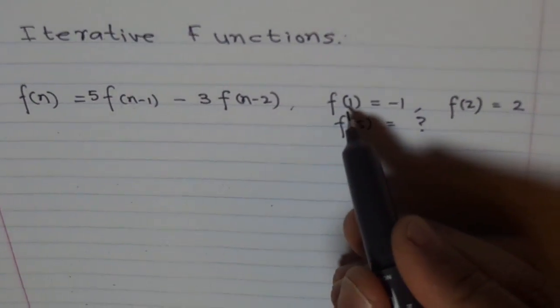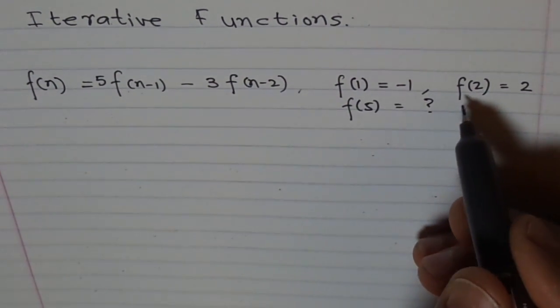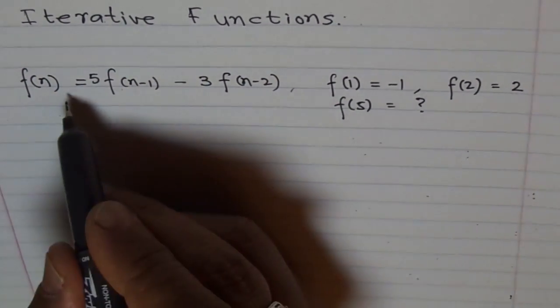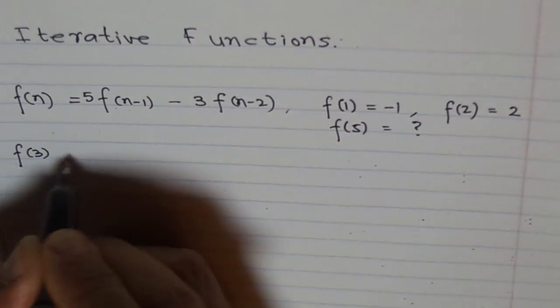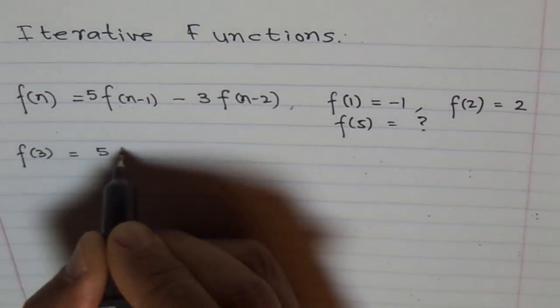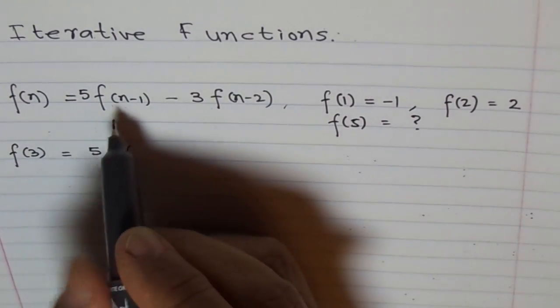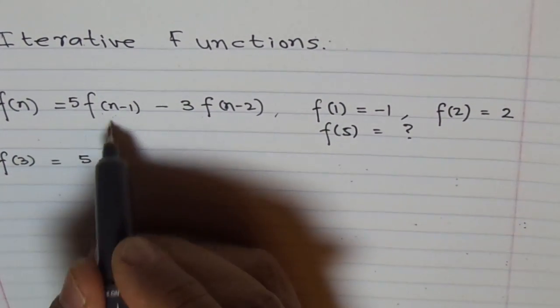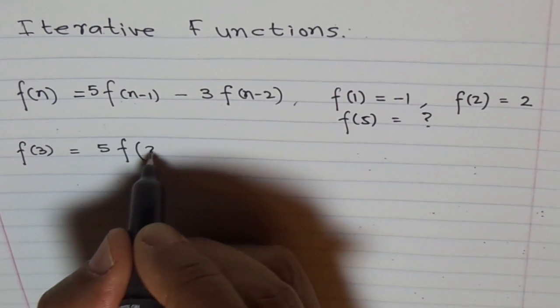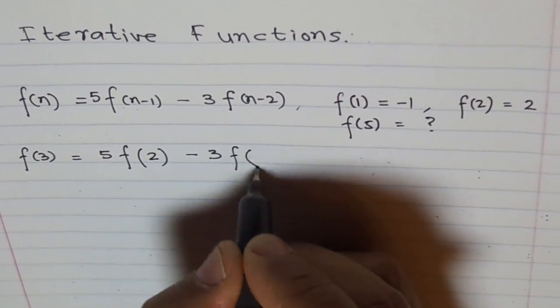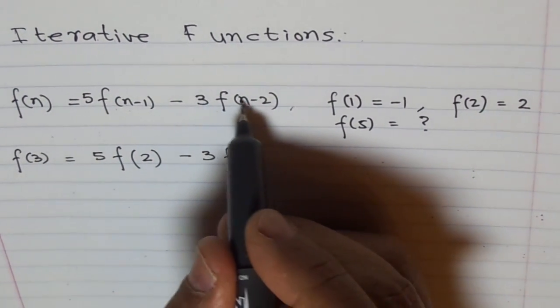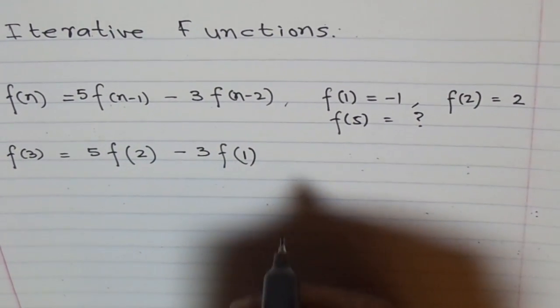We know f(1), we know f(2). Let us start with f(3) using the given equation. So f(3) is equal to 5 times f(n-1), that means 3 minus 1, which is 2, minus 3 times f(n-2). 3 minus 2 is 1.